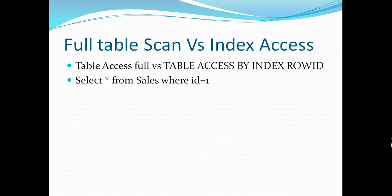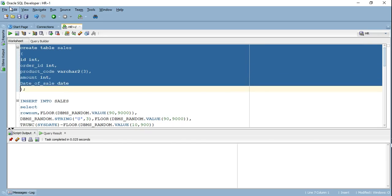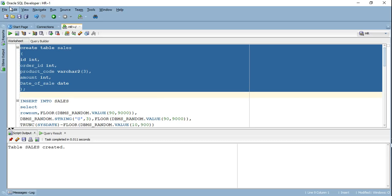Let's understand this in SQL Developer using the query: SELECT * FROM sales WHERE ID = 1. Here I'm creating a sales table with five columns: ID, order ID, product, amount, and the date of the sale. I then inserted a million rows into this table.